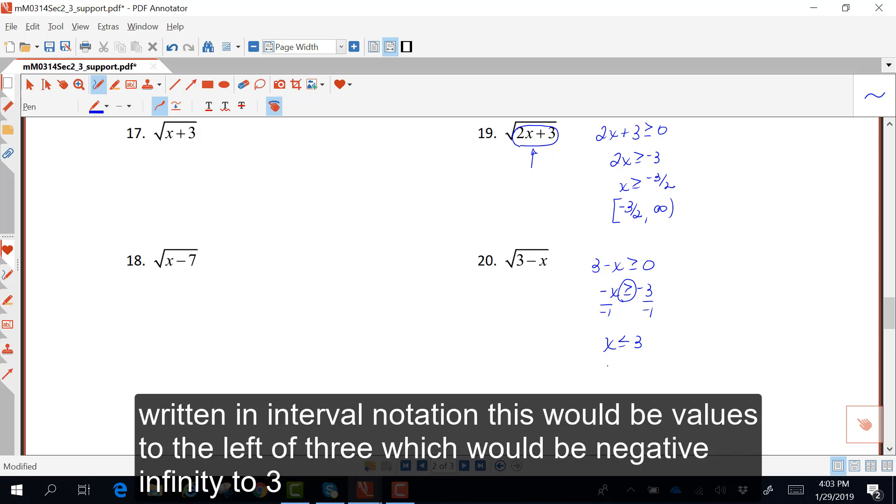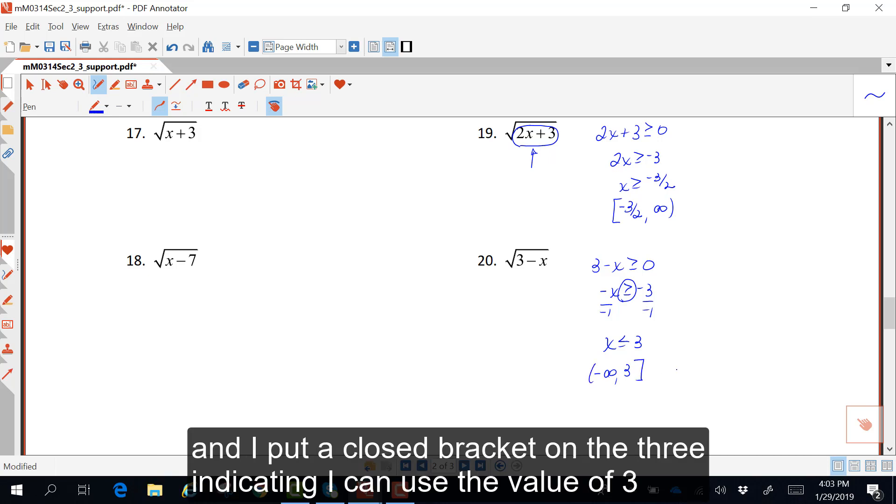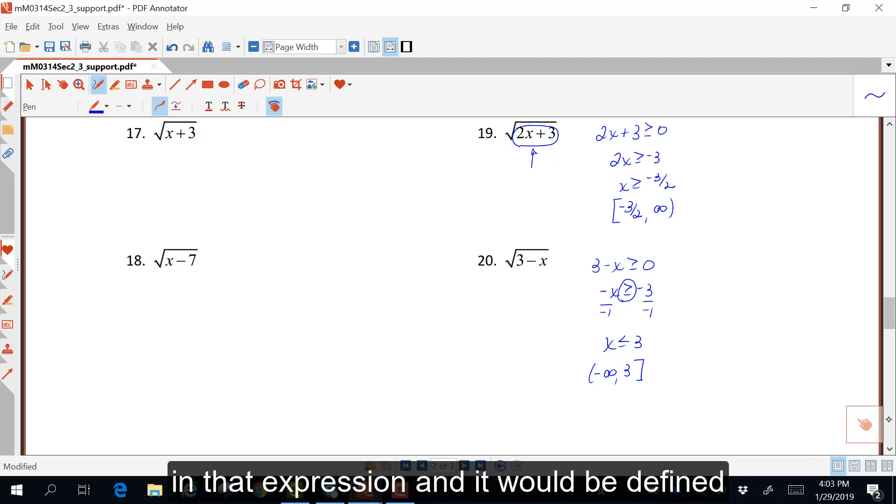Written in interval notation, this would be values to the left of 3, which would be negative infinity to 3. And I put a closed bracket on the 3, indicating that I can use the value of 3 in that expression, and it would be defined.